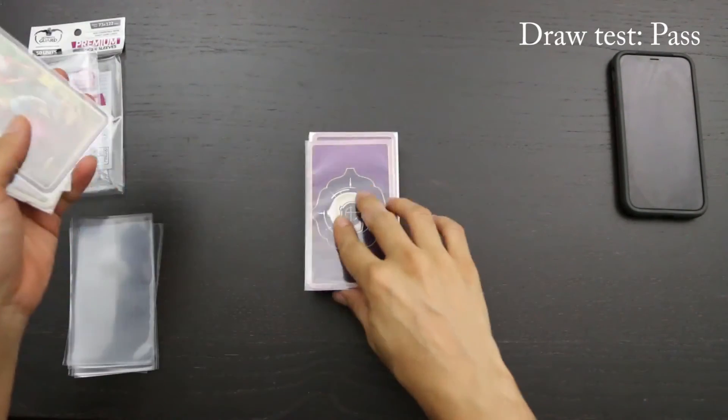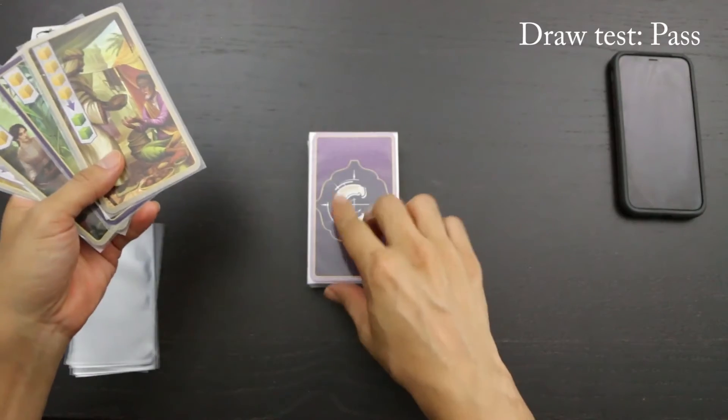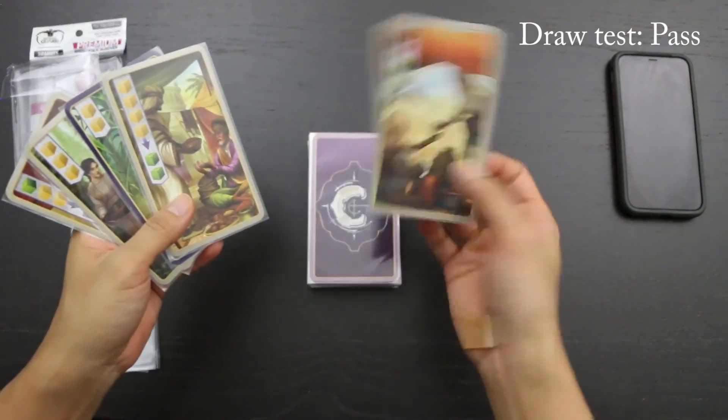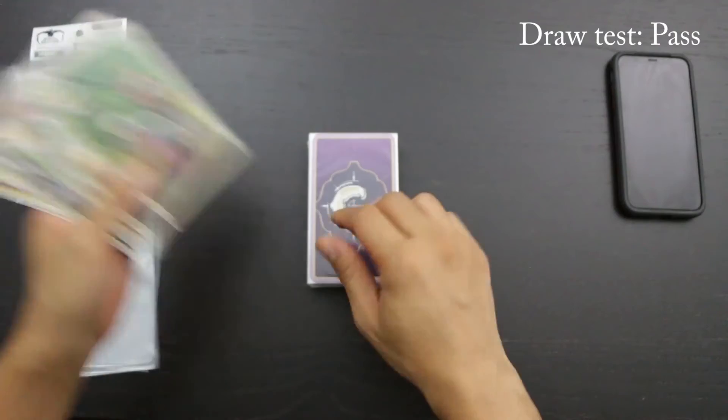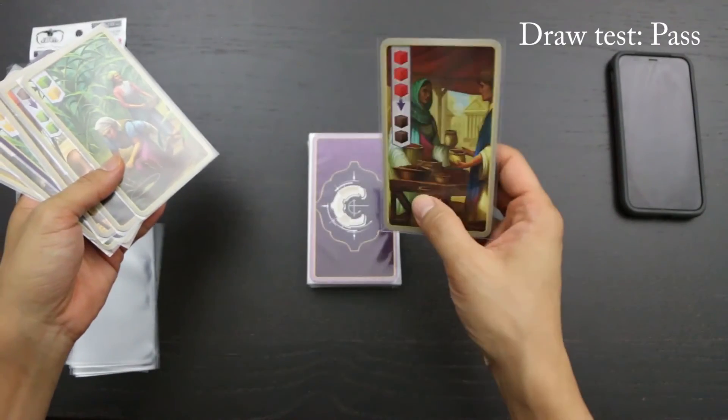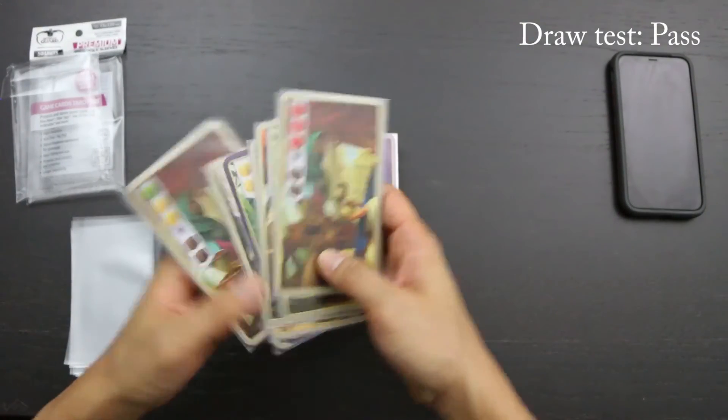No problem at all, the deck is barely moving. Despite their relative stickiness to each other, they are coming off the top of the deck without any issues. So I think that we're not going to have any problems with deck stability in general when it comes to these sleeves.